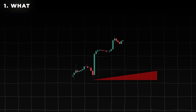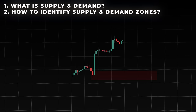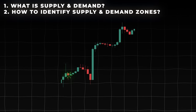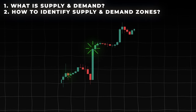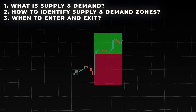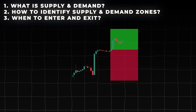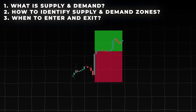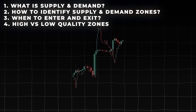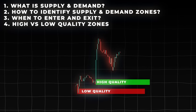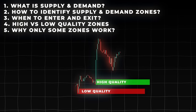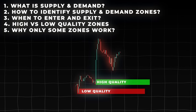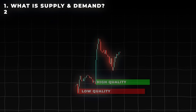Number 1: what is supply and demand? Number 2: how to identify and draw supply and demand zones? Number 3: where to enter and exit? Number 4: high quality zones versus low quality zones? And last but not least, Number 5: why some supply and demand zones work and why some don't?